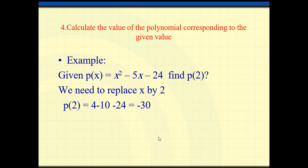Now, how to calculate the value of a polynomial for a given value. If p(x) = x² minus 5x minus 24, find p(2). I replace x by 2: 2² equals 4, minus 5 times 2 equals minus 10, minus 24. Using a calculator, the answer is minus 30. It's easy — just replace and calculate.